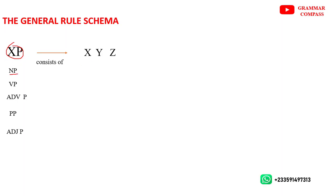If XP stands for any phrase in English, what about the arrow? The arrow here means 'consists of.' It means this particular phrase consists of something. So if you hear 'consists of,' it means that everything that comes to the right will be constituents of the major phrase. That is why the arrow is called 'consists of.'